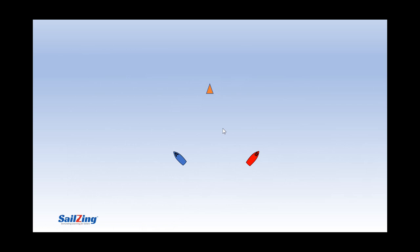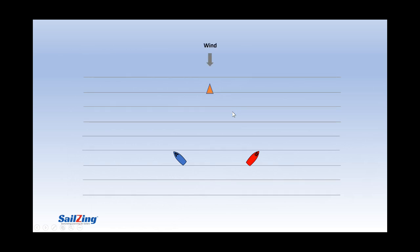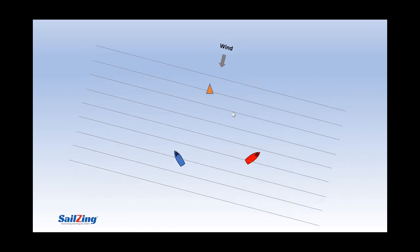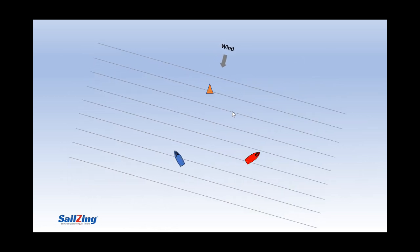Let's look at the answer using the ladder rungs. If the wind shifts to the right, the ladder rungs will shift with it since the ladder rungs are always perpendicular to the wind. After the wind shift, which boat is on the ladder rung closest to the mark? The answer is B since B is now more than one ladder rung higher than A as you see here.